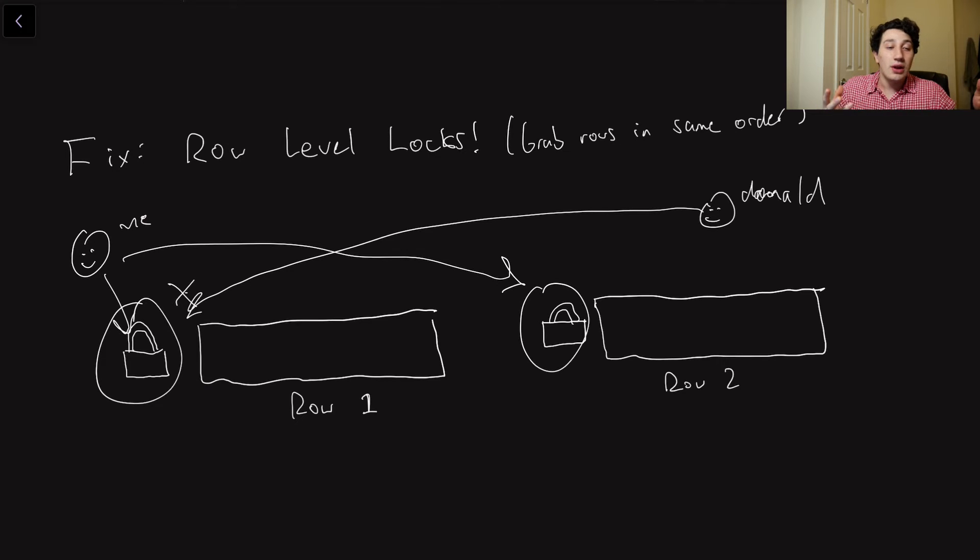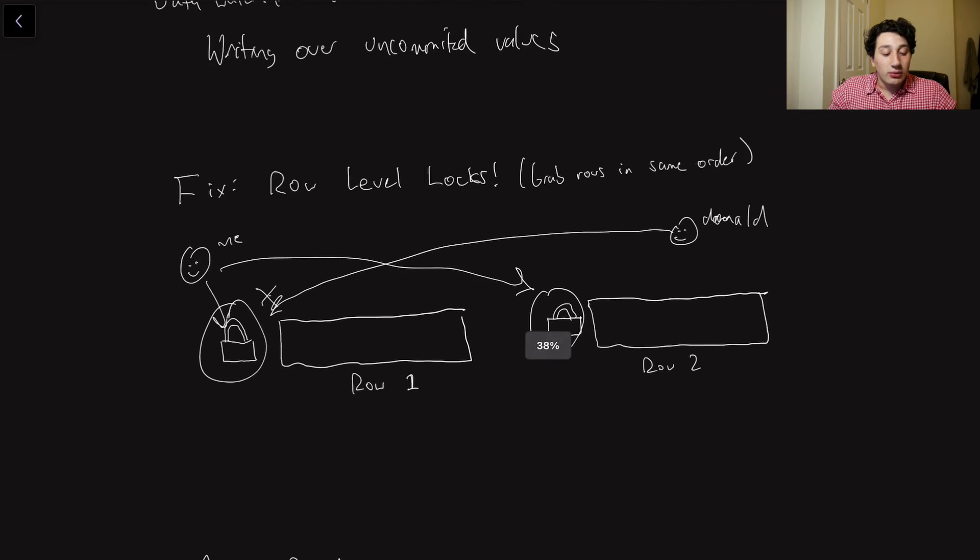which is a thing in some kind of pieces of hardware like databases, where they'll actually look for resources in deadlock, and if that's the case, they'll have to make one of those transactions give up its locks. Okay, so row-level locks are basically how we go ahead and fix dirty writes, which is writing over uncommitted data. However,